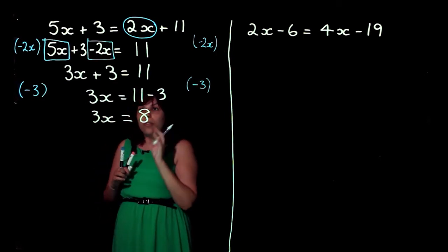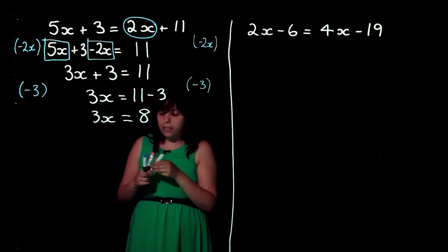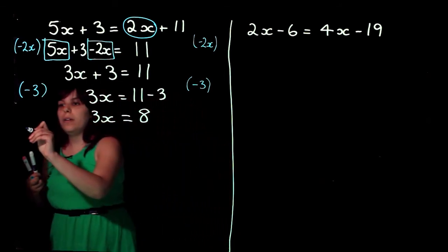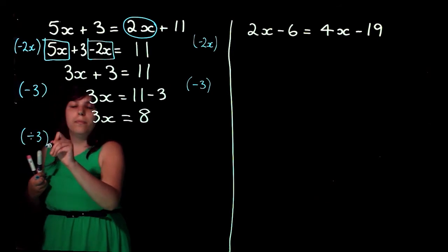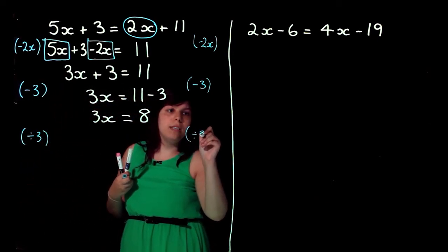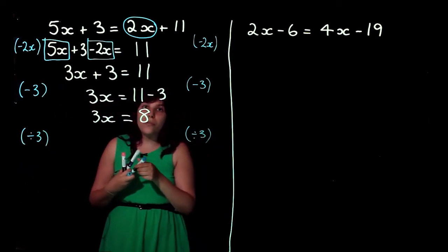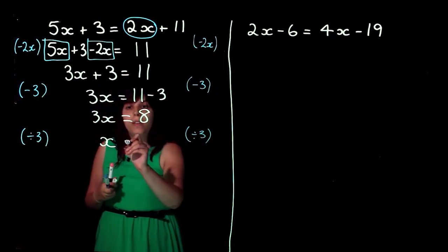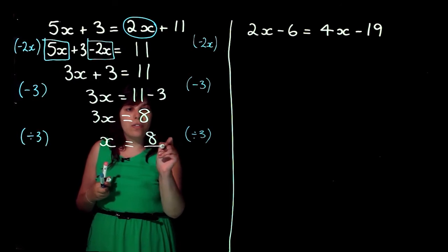Now, I've got 3x's, but I only want 1x. So, how do I get rid of times by 3? I divide by 3. Do that to both sides. So, 3x divided by 3 is just going to give me x, because 3 divided by 3 is 1. And then, I'm going to have 8 over 3.